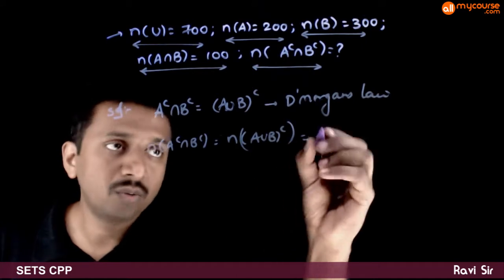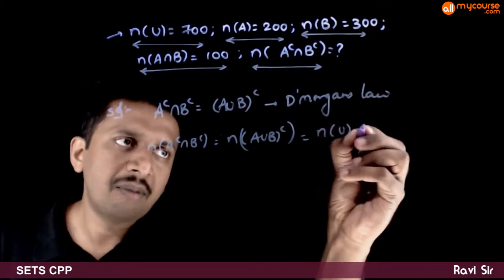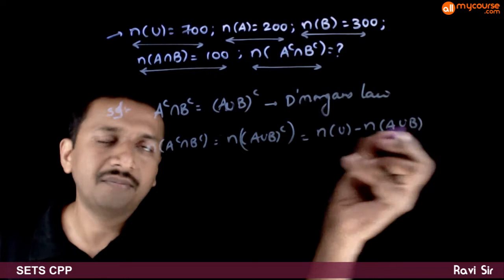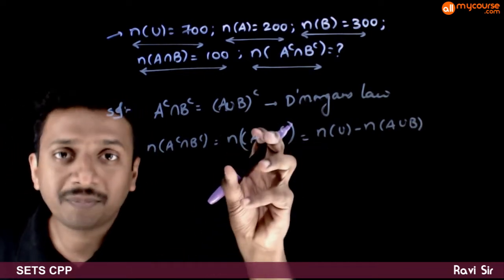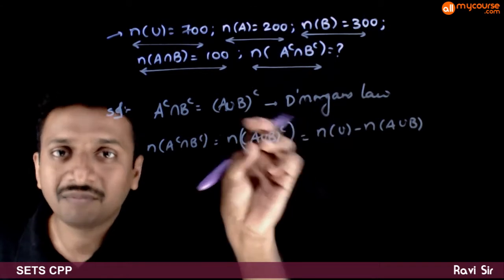That is equal to n of U minus n of A union B. Because how many elements are there in complement? You just need to subtract the set from the universal set.